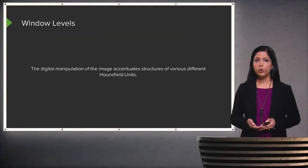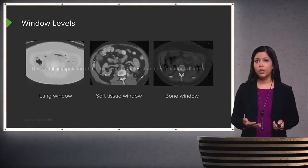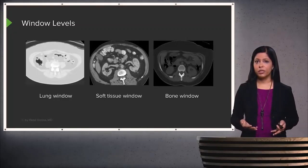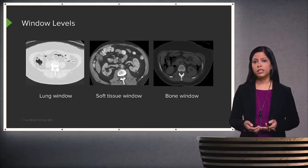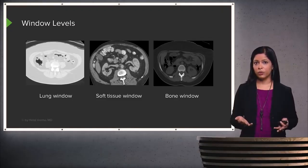What are window levels? Window levels are digital manipulation of the image that help you accentuate structures of various different Hounsfield units. Window levels can actually be changed by the radiologist as a post-processing mechanism after the CT scan is obtained — the CT scan is acquired in one window, and everything else can be adjusted afterwards.